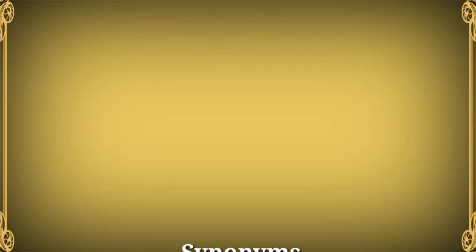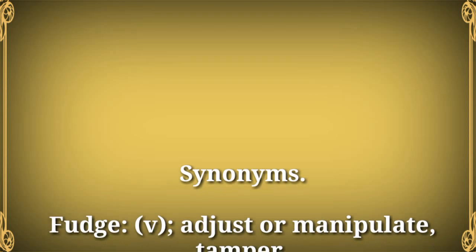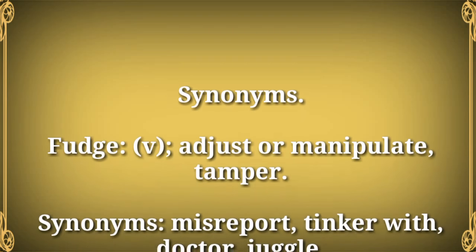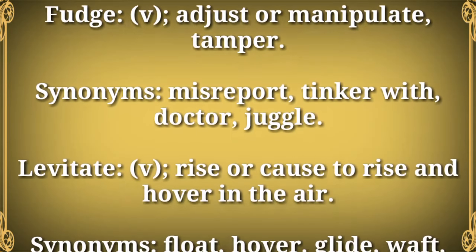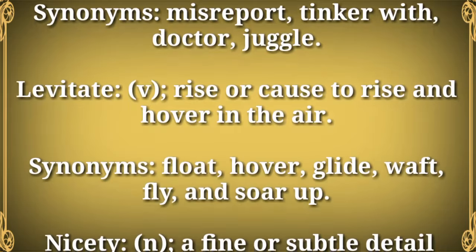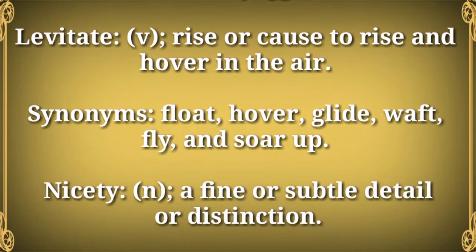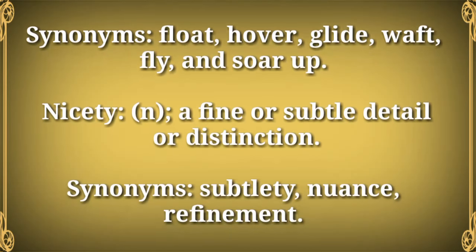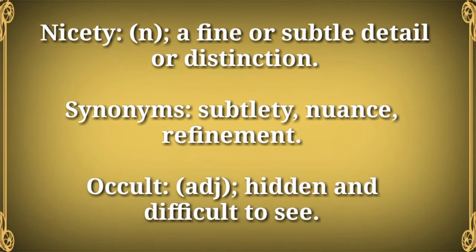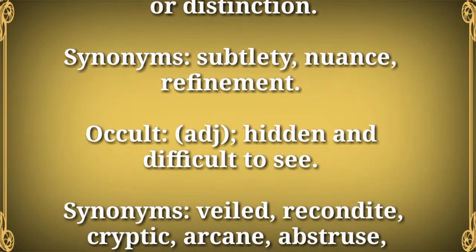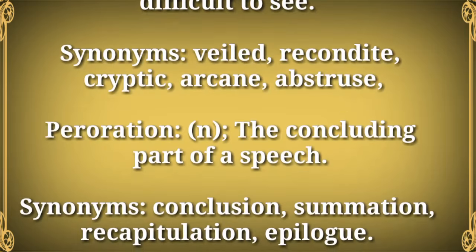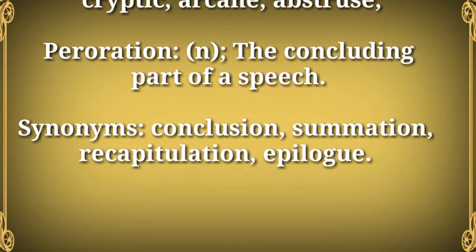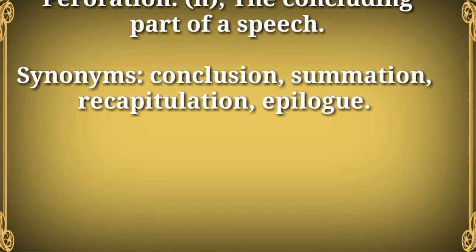Synonyms: Fudge (v) — adjust or manipulate, tamper. Synonyms: misreport, tinker with, doctor, juggle. Levitate (v) — rise or cause to rise and hover in the air. Synonyms: float, hover, glide, waft, fly, and soar up. Nicety (n) — a fine or subtle detail or distinction. Synonyms: subtlety, nuance, refinement. Occult (adj) — hidden and difficult to see. Synonyms: veiled, recondite, cryptic, arcane, abstruse.